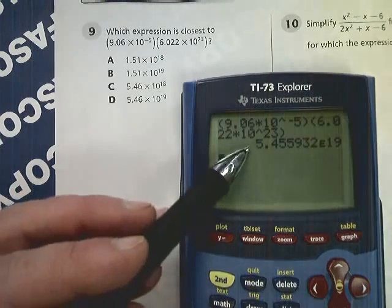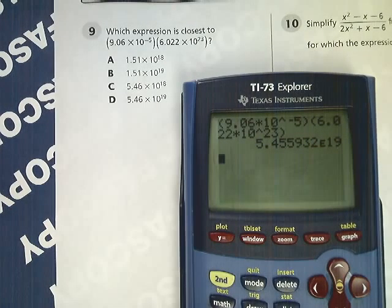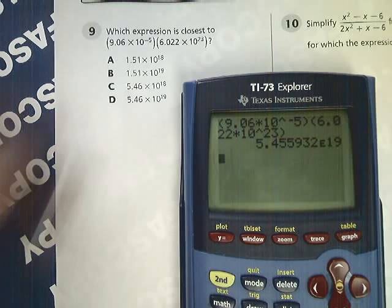You'll get this answer. What this e to the 19 thing means, essentially for you in this case, it means 10 to the 19th power. So you get 5.46 times 10 to the 19th power, and that's the answer for number 9.